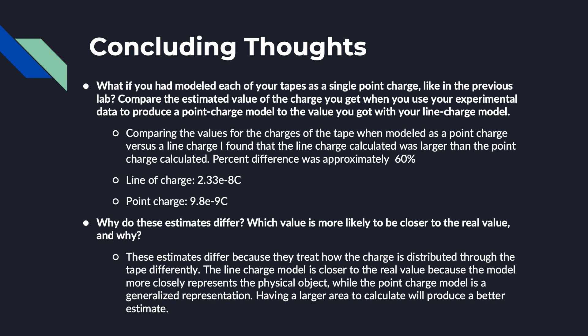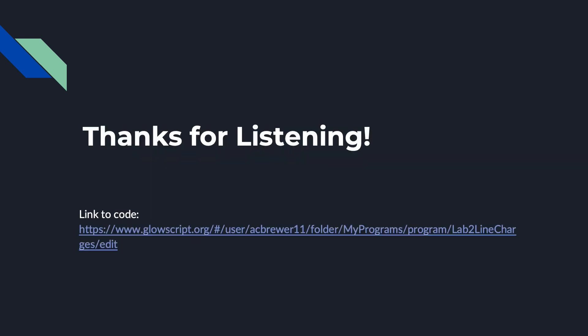Why do these estimates differ, and which value is more likely to be closer to the real value? These estimates differ because they treat how the charge is distributed through the tape differently. The line charge model is closer to the real value because it more closely represents the physical object, while the point charge model is a more generalized representation. Having a larger area to calculate will produce a better estimate. Here is the link to my code.